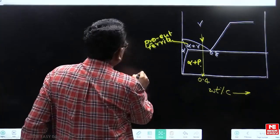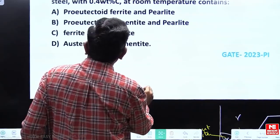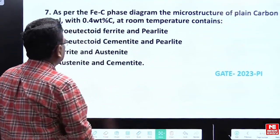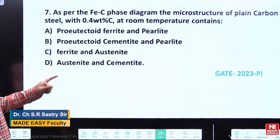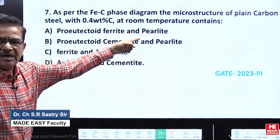Let us try to see which choice is matching from the choices that are given. See, choice A, proeutectoid ferrite and perlite. Answer is there. Need not worry about rest of the things.